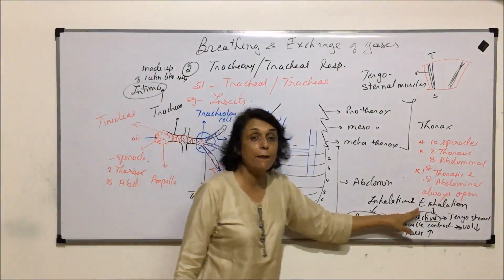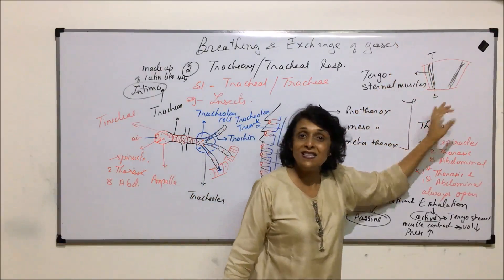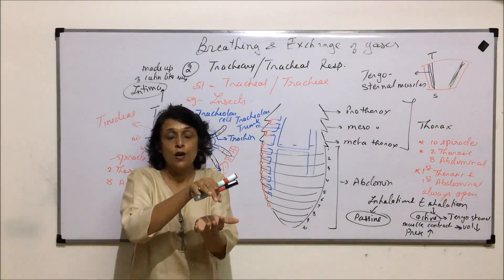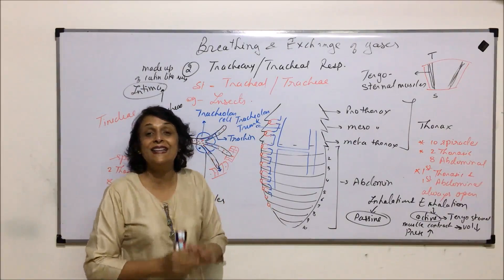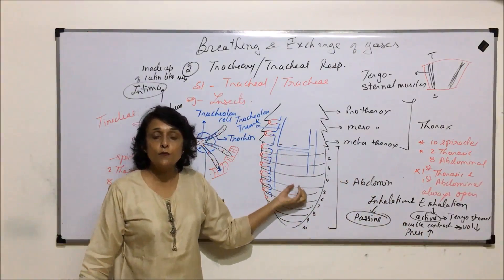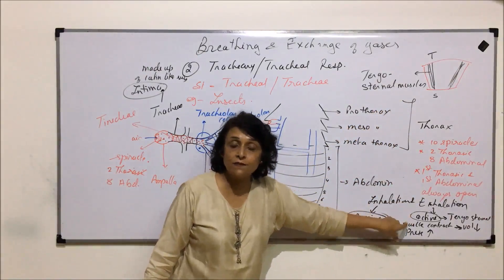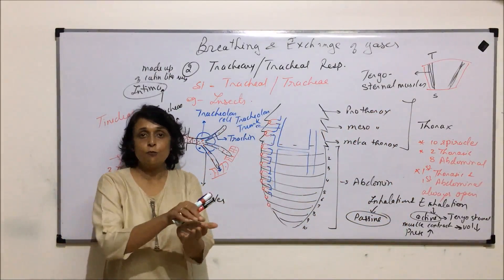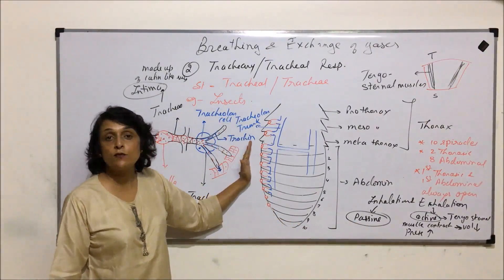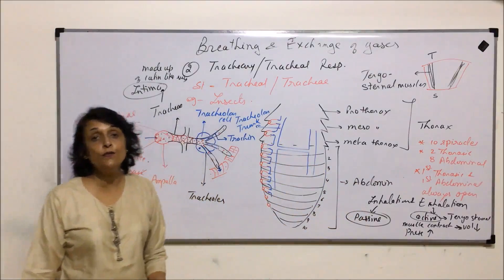To review: during exhalation, the tergosternal muscles connect the tergum with the sternum. When they contract, the plates come closer, volume decreases, pressure increases, and air rushes from the tubes to the surroundings — this is exhalation, an active process. When the muscles relax, the plates return to normal position, volume increases, pressure decreases, and air from the surroundings goes into the tubes — so inhalation is passive in case of these insects.